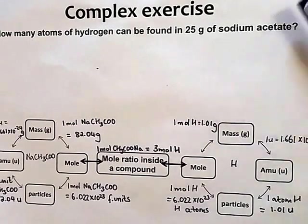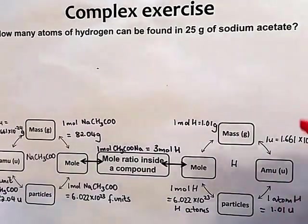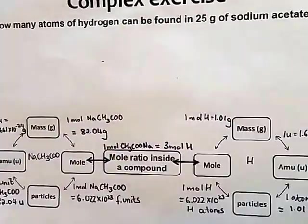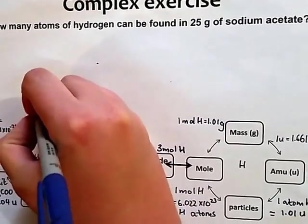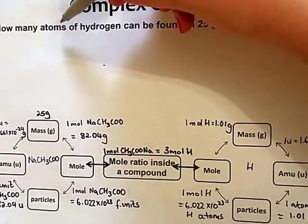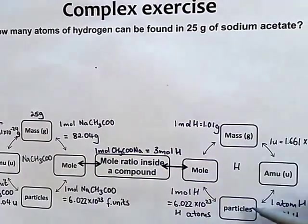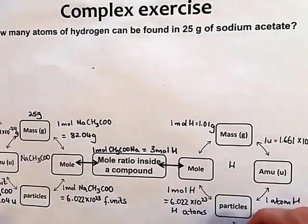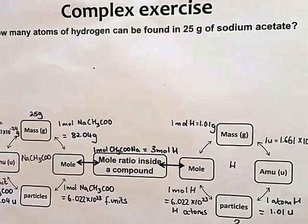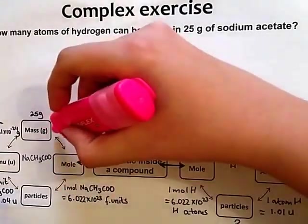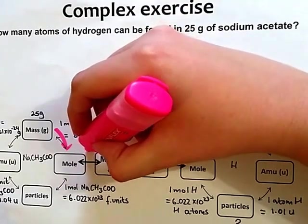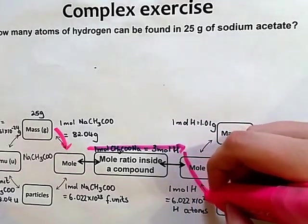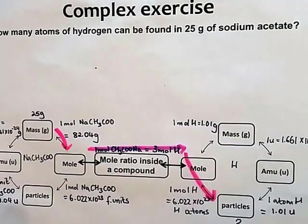Now to solve the question, let's see where we begin. We have 25 grams of sodium acetate. So we go to the sodium acetate wheel. Here we've got 25 grams and we want to get to atoms of hydrogen. And remember particles signify atoms, ions, molecules or formula units. So this is where we want to get to. Let's mark out our route. All right, so our route will be accomplished in three steps.